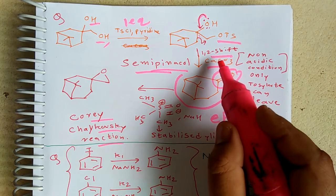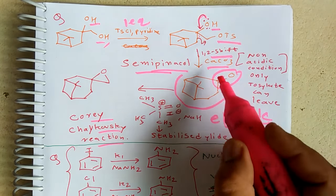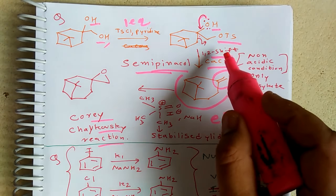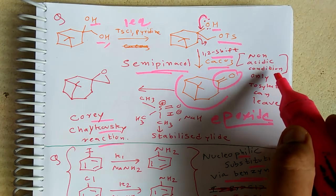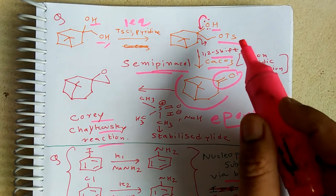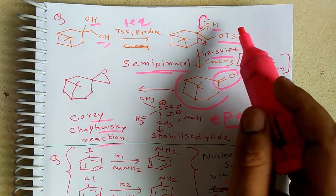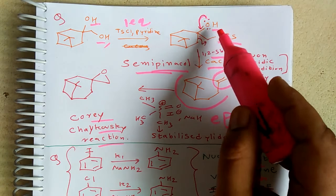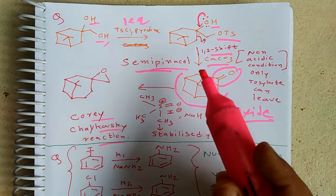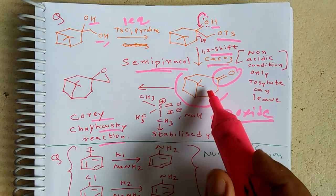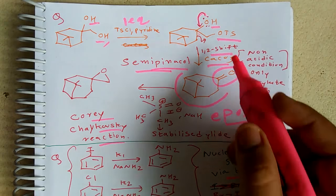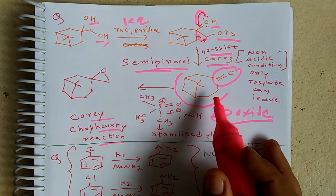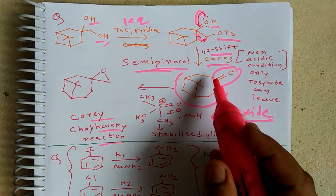Then calcium carbonate is given, which acts like potassium carbonate — it removes the proton and facilitates a 1,2-shift with ring expansion. We use non-acidic conditions because under acidic conditions, the tosylate could also undergo elimination, creating ambiguity. So calcium carbonate is used directly and we get the ring expansion product. With a 1,2-shift, the electron shifts to give a seven-membered ring, as also described in Clayden's rearrangement chapter.